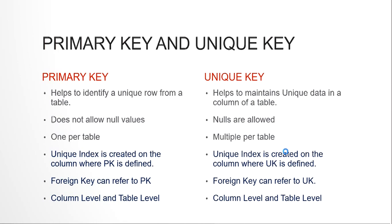Many people get confused with the composite primary key concept. When you say composite primary key, that is a single primary key based on multiple columns. Multiple columns are grouped together, and on that group of columns a primary key constraint is applied — that is called a composite primary key. But still the primary key remains one, not multiple. Those three columns, for example, are grouped together as one and then given the constraint of primary key. So you can have only one primary key but you can have any number of unique keys.